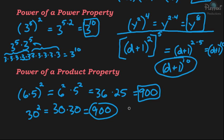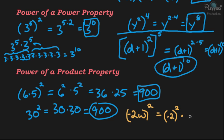One more example: if we have negative 2w squared, this is a power of a product situation — negative 2 times w, with the whole thing squared. We distribute the exponent: negative 2 squared times w squared. Negative 2 times negative 2 is positive 4, so the answer is 4w squared.